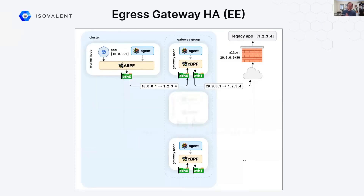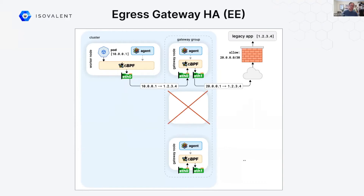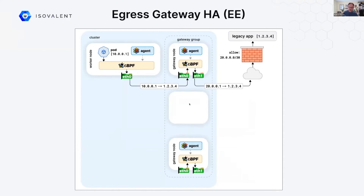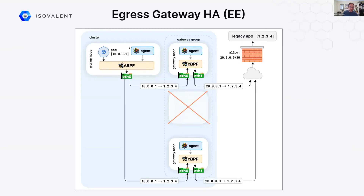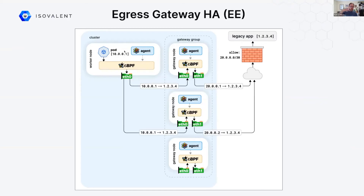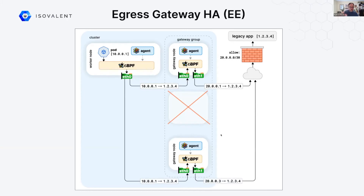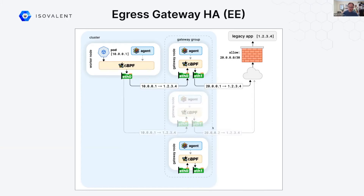Now, what we're going to talk about here is the specific high availability version of this egress gateway feature, which is available in Cilium Enterprise. In Cilium Enterprise, we have the ability to specify actually several nodes for a NAT policy. So here we have three nodes for a NAT policy. If a node fails, the traffic will keep going through the other nodes. And when the nodes are not failing, the traffic will actually be load balanced between the three nodes.